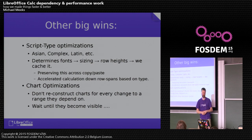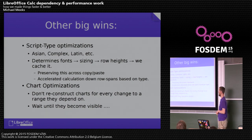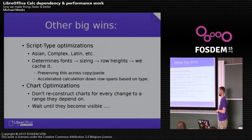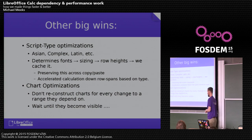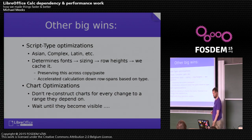Chart optimization: every time the chart dependency range was changed, we were reconstructing and rebuilding the whole chart — tearing the whole thing down and reconstructing it with all its draw shapes. For big charts that's really not a good idea, and we were doing that for charts you couldn't even see, on sheets no one was looking at. So now Kohei has delayed this until charts actually become visible.